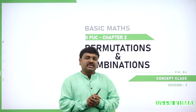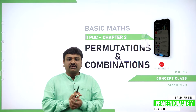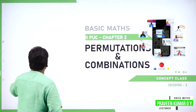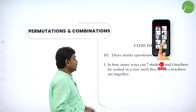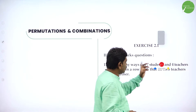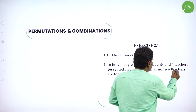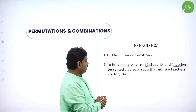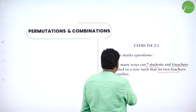Welcome to the session, dear students. Today I will solve some more problems of permutation and combination. That is exercise 2.13 markers. In how many ways can 7 students and 4 teachers be seated in a row so that no 2 teachers are together?